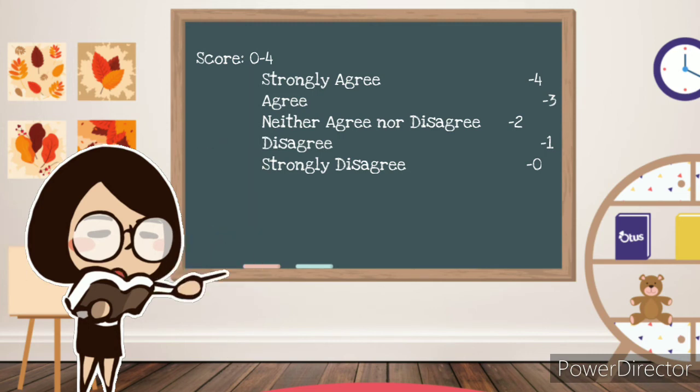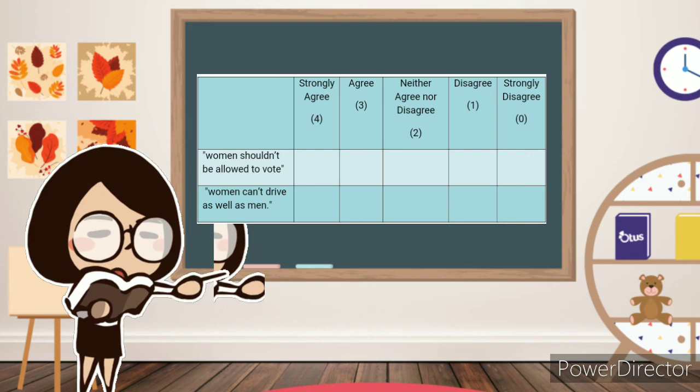0 for strongly disagree, 1 for disagree, 2 for neither agree or disagree, and so on. The scores for each of the statements would then be added for each respondent to create an overall score of prejudice.